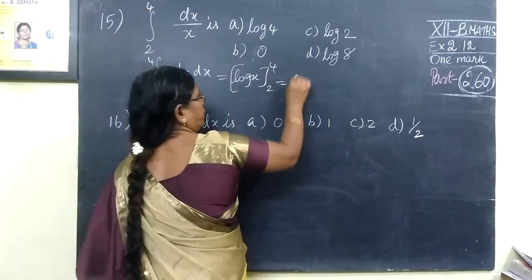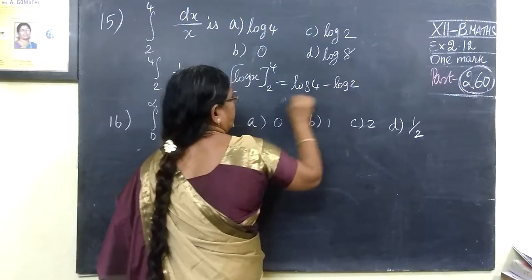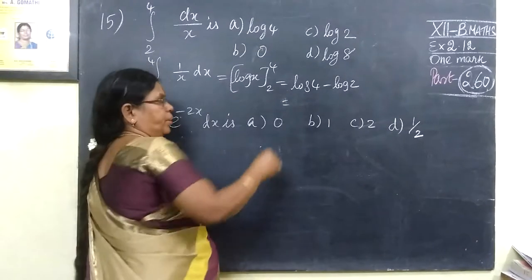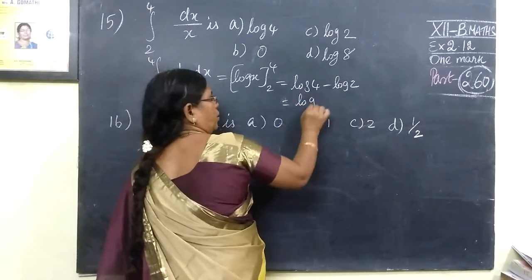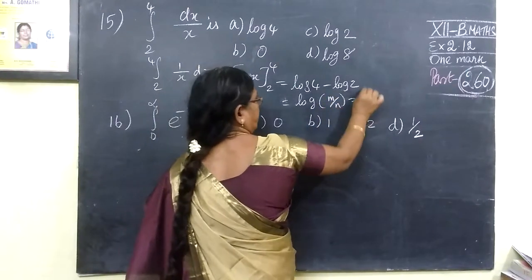Now upper limit minus lower limit. So minus 1. Minus is the log M by N. Yeah, so log M minus log N is equal to log M by N.